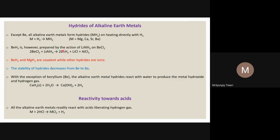If hydrogen is already present in the form of hydride (H⁻), then BeH₂ can be formed. In this reaction, BeCl₂ (beryllium chloride) reacts with lithium aluminum hydride (LiAlH₄, which provides AlH₄⁻ = AlH₃ + H⁻). The H⁻ replaces Cl in a double displacement reaction — the hydride goes to beryllium and the chlorine goes to lithium, forming beryllium hydride along with LiCl and AlCl₃.